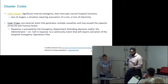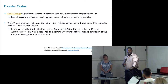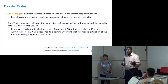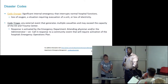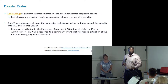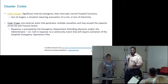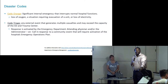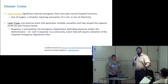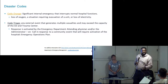Once a Code Orange or Code Triage is called, the hospital command center will be activated depending on the location of the incident. If something were to happen here in Hillcrest, we would call the code — whether triage or orange — and activate the command center. Does anybody know where the command center is located here in Hillcrest? It's in the ACR — the Administrative Conference Room, room 117, first floor as you walk into the hospital. It's not usually clearly identified, so many people don't know where it is.